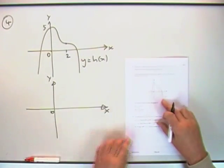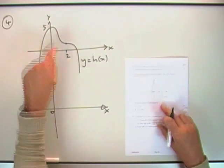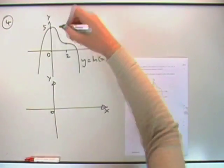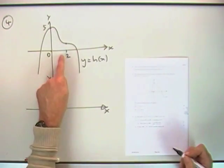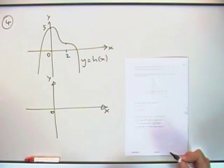Question 4, there's a sketch given here. It's only indicating two points: a turning point at 0,5, a turning point at 2 something which isn't told.